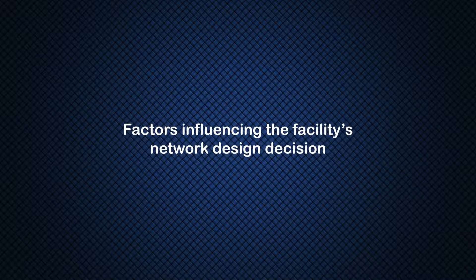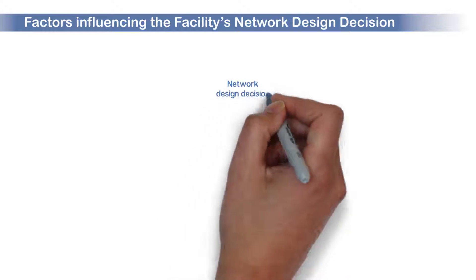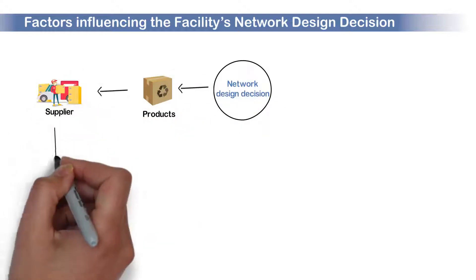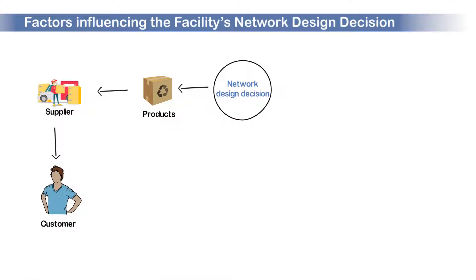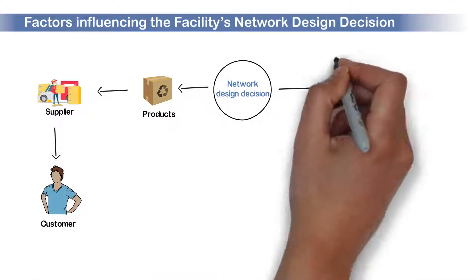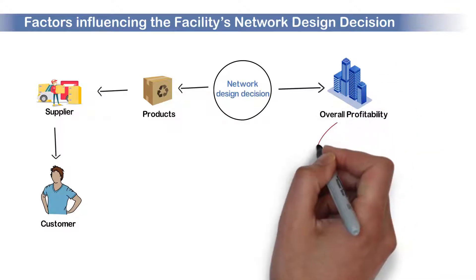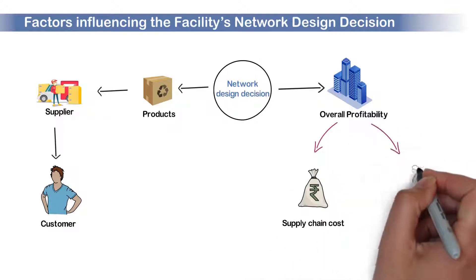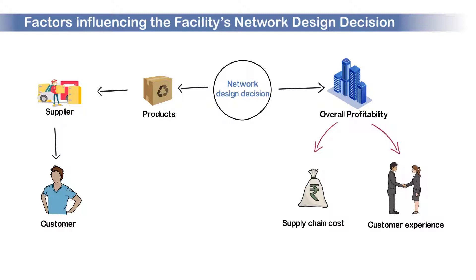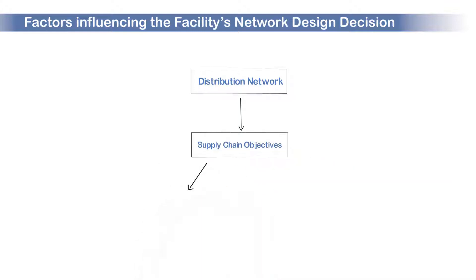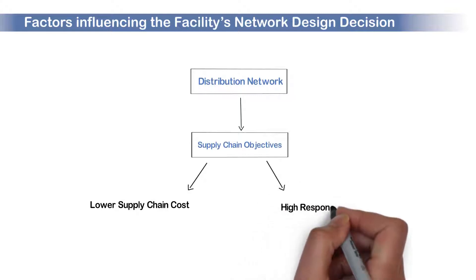Let us now look into the factors which influence the facility network design decision. Network design decision plays a significant role in determining the distribution network for moving products from the supplier point to the customer point in the supply chain. It is the key driver of the overall profitability of a firm in the supply chain because it affects both the supply chain cost and the customer experience directly. Designing an appropriate distribution network will help us to achieve the supply chain objectives, that is, lower supply chain cost and high responsiveness.